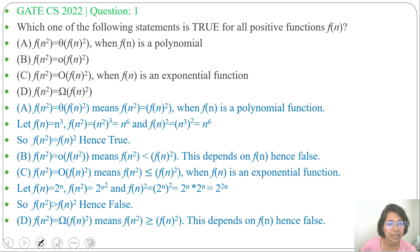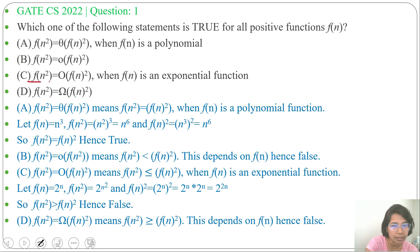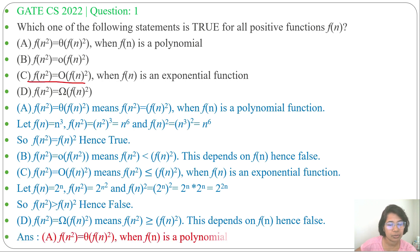Option B and Option D are false because the function type is not given. Option C is false because for the exponential function, it doesn't hold. So only Option A is true. The answer is Option A: f(n²) = θ(f(n)²), where f(n) is a polynomial function.